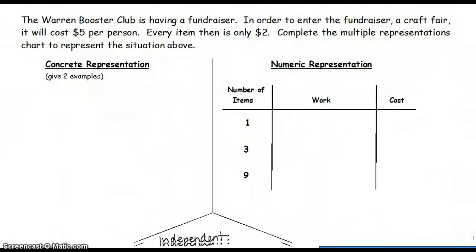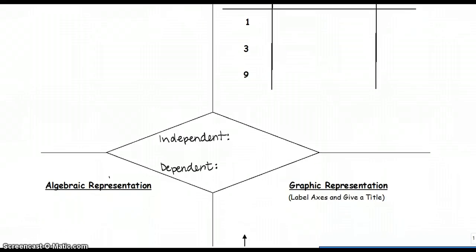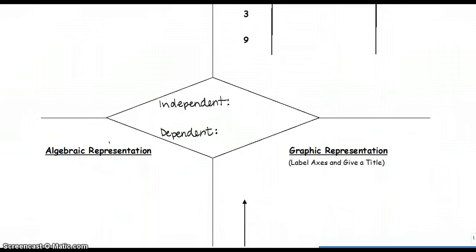The first thing we need to do is identify our independent and dependent variable. Remember, the dependent variable is going to depend on something to change the answer. In this case, the total amount spent is going to depend on how many items this person has purchased. So the dependent variable is total amount spent, where the independent variable is going to be the number of items that you have purchased. The number of items is then going to change how much money this person has spent.